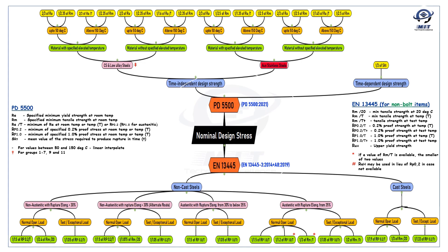For austenitic steels in PD5500 with specified elevated temperature up to 50°C, nominal design stress is 2/3 of Re or 1/2.5 of Rm at room temperature. For temperatures above 150°C, it is 1/1.35 of Re/T (minimum yield or 0.2% or 1% proof strength for austenitic) or 1/2.5 of Rm. For material without specified elevated temperature up to 50°C it is 2/3 of Re or 1/2.5 of Rm, and above 150°C it is 1/1.45 of Re/T or 1/2.5 of Rm. For creep or time-dependent design, nominal design stress is 1/3 of Srt — the mean stress required to produce rupture in time t.